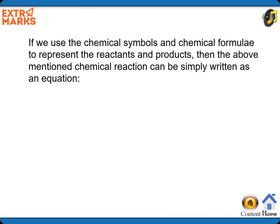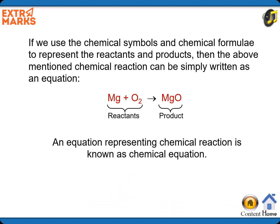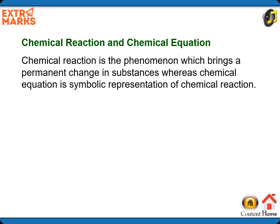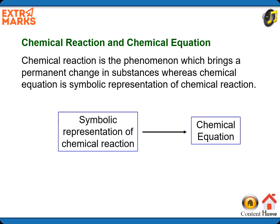Chemical substances that take part in a chemical reaction are called reactants and the substances formed in the reaction are called products. If we use chemical symbols and chemical formulae to represent the reactants and products, then the chemical reaction can be written as an equation. The equation that represents the chemical reaction is known as a chemical equation. Chemical reaction is the phenomenon which brings a permanent change in substances, whereas chemical equation is the symbolic representation of chemical reaction.